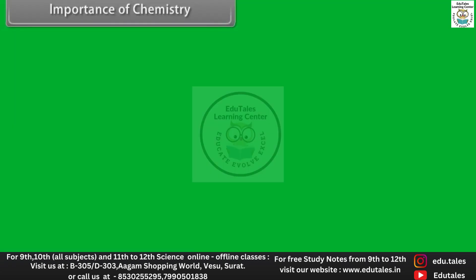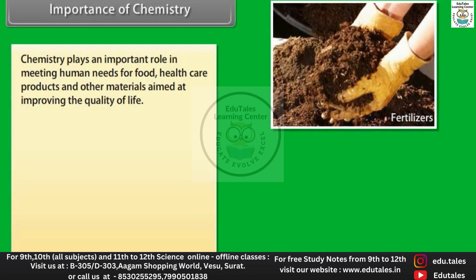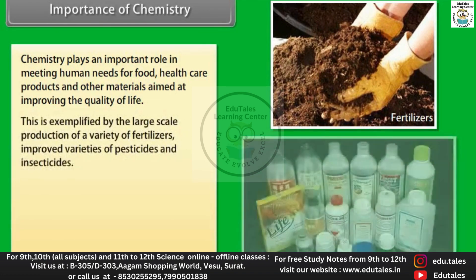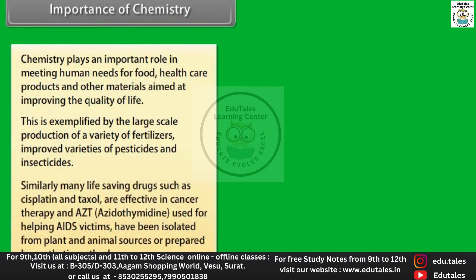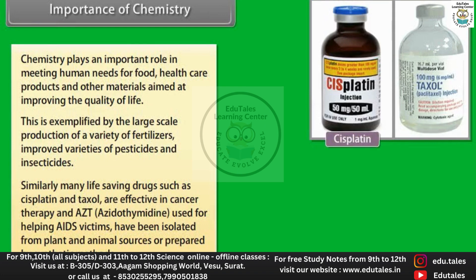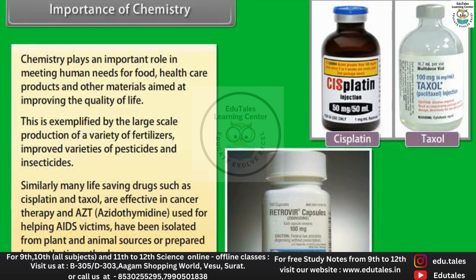Chemistry plays an important role in meeting human needs for food, healthcare products and other materials aimed at improving the quality of life. This is exemplified by the large-scale production of a variety of fertilizers, improved varieties of pesticides and insecticides. Similarly, many life-saving drugs such as cisplatin and taxol are effective in cancer therapy and AZT Zedothymidine, used for helping AIDS victims, have been isolated from plant and animal sources or prepared by synthetic methods.